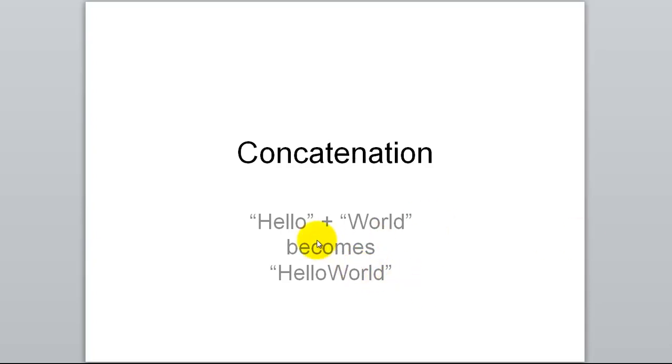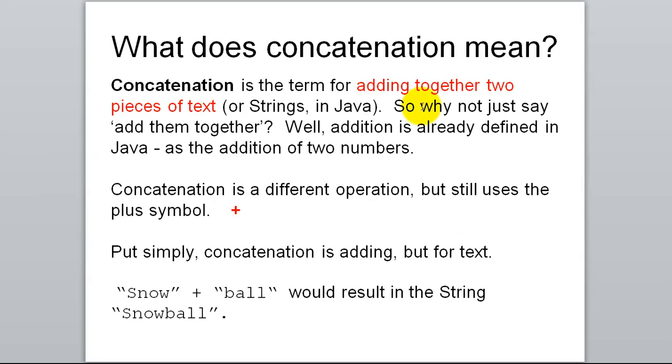Well, here's a little hint. If we have the literal text hello plus the literal text world, it would become hello world. Well, that's generally concatenation in a nutshell. Concatenation means adding together two pieces of text. Rather than addition, this is called concatenation. Because really, what does it mean to add a word plus a word? So it doesn't make sense to call it addition.